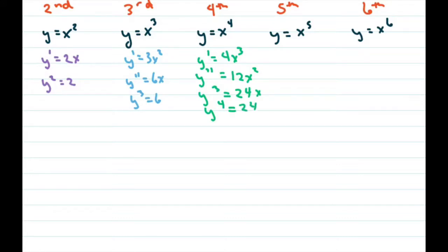And then for this one, we get the first derivative is 5x to the fourth. The second derivative is going to be 20x cubed. The third derivative is going to be 60x squared. The fourth derivative is 120x, and the fifth derivative is 120.